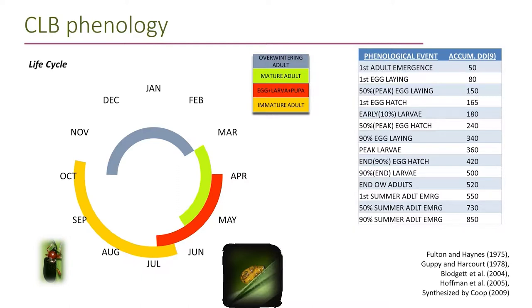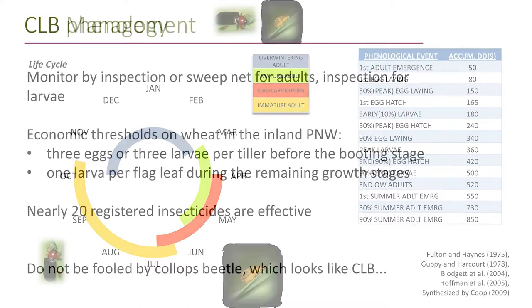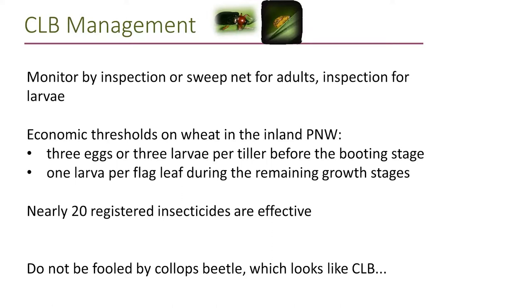Cereal leaf beetle is univoltine — one generation a year — and overwinters as adults. Adults emerge in March or April depending on location and begin laying eggs. Immature stages — eggs, larvae, and pupae — are present from April to June, then immature adults from July into October, which are the ones that overwinter. We start looking for eggs early in the season if we suspect a problem. The economic thresholds are: three eggs or three larvae per tiller before the booting stage, and one larva per flag leaf during remaining growth stages. As the plant matures and the flag leaf becomes more important, the threshold goes down. There are nearly 20 registered insecticides effective against this pest.